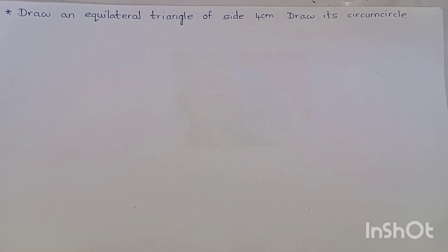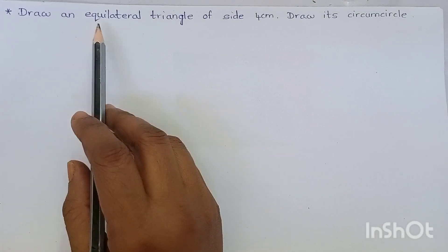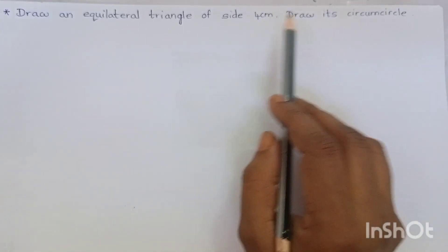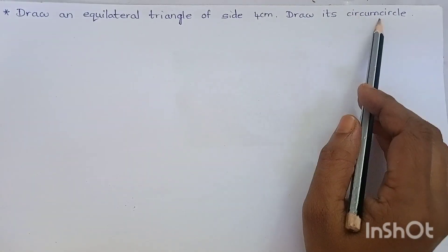First, let me read the question. Draw an equilateral triangle of side 4 cm and draw its circumcircle.